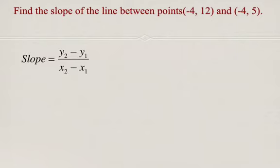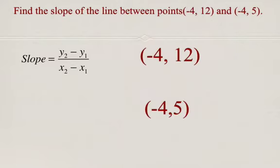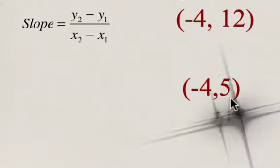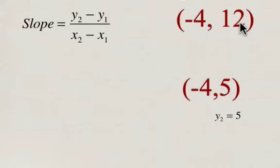Just as before, we're going to start off with our slope formula and identify our coordinates, and then assign our various variables. So first one, y2 is going to be 5, y1 will be 12, x2 will be negative 4, and x1 will be also negative 4.